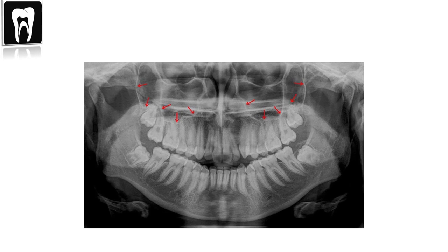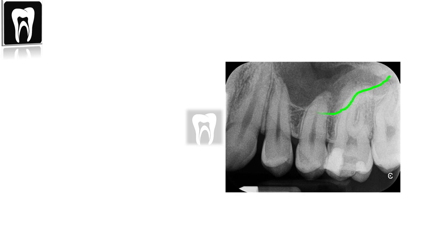The cortical bone is clearly demarcated on a radiograph as a white or radiopaque line. That is why we see the maxillary sinus floor or the borders of the inferior alveolar canal as a white radiopaque line. In intraoral periapical radiography or panoramic radiography, we can clearly see the white radiopaque line of the maxillary sinus and the inferior alveolar canal. So what makes it tricky when roots appear to be inside the sinus?